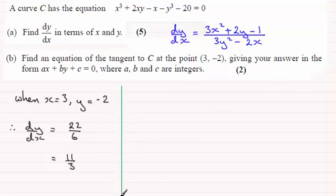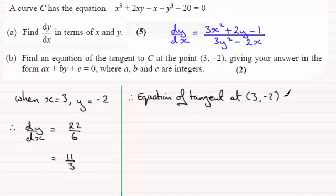And so therefore, we're in a position to give the equation of the tangent. So just write in a quick subtitle here, equation of tangent, and we'll say the tangent at (3, -2). And what is it going to be? Well, it's going to be basically y minus y1, so y minus minus 2, equals m the gradient, which is 11 thirds, times x minus x1, x1 being the 3.